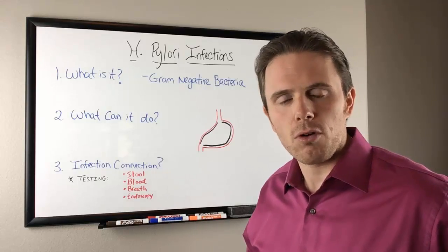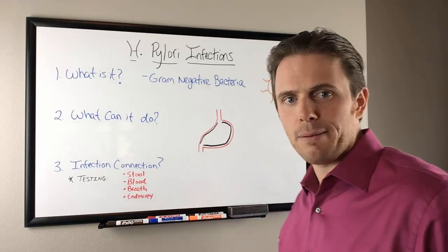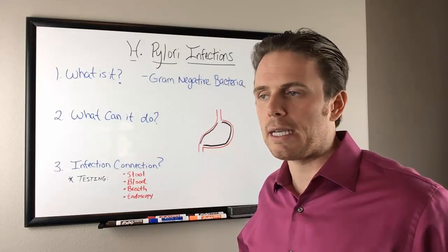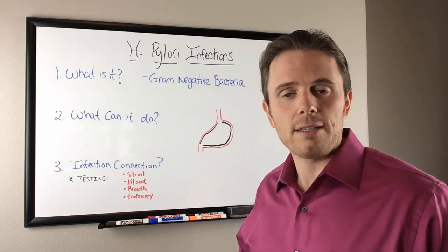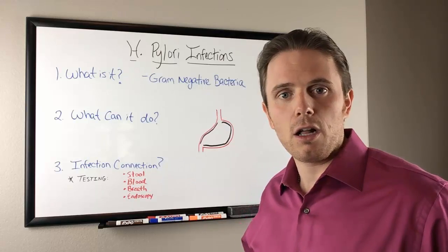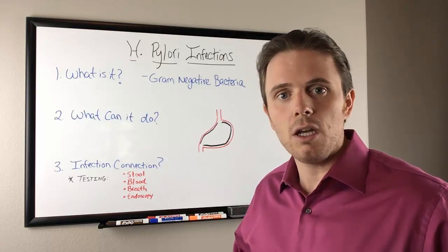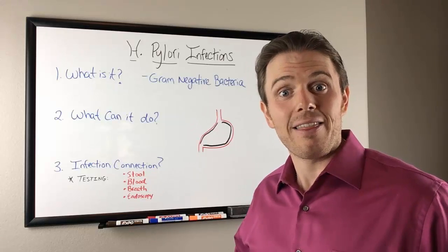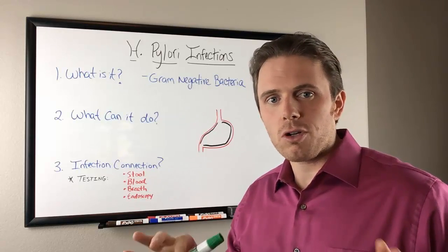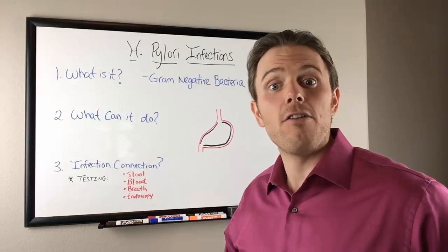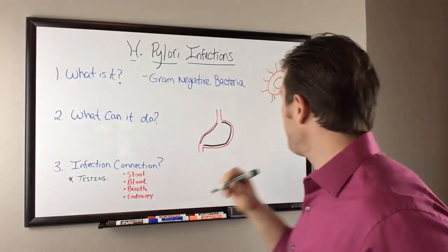When we knock out these infections, the typical antibiotic protocol for H. pylori would be PrevPak. That's typically a proton pump inhibitor like Omeprazole or Nexium, and then we would use something like clarithromycin, amoxicillin, or bismuth to knock it out. Those protocols last about 10 to 14 days, and there are lots of side effects.